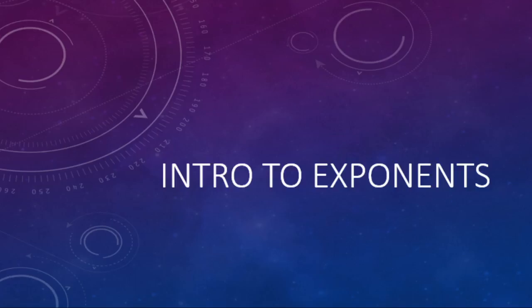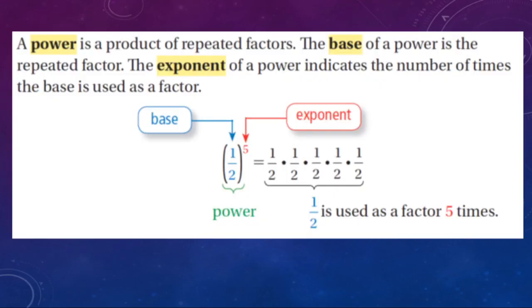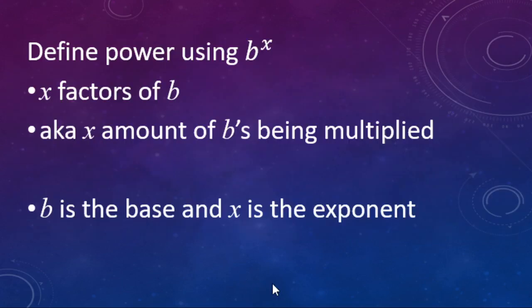We're going to be looking at exponents — what they are and how they work — just giving a brief introduction. A power has two parts: it has a base and an exponent. The exponent, here it's a five, is telling you how many of the base you have being multiplied together. In this case, five one-halves are being multiplied together. The fancy word for things being multiplied together is 'factor,' so we have five factors of one-half.